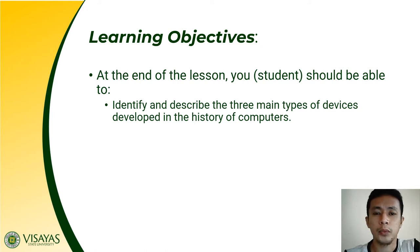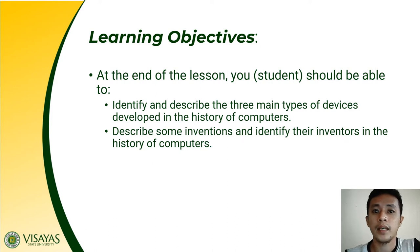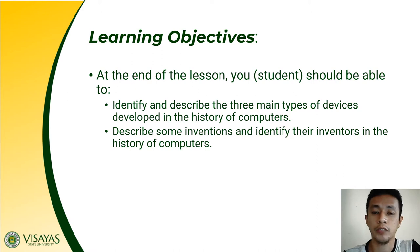Now, at present, what do you think is our type of computer? Is it manual mechanical, electromechanical, or is it an electronic device? Then next, you should be able to describe some of the inventions and identify their inventors in the history of computers. These lessons are anchored in these different learning objectives that each of you must be able to attain by the end of this lesson.